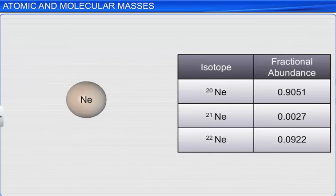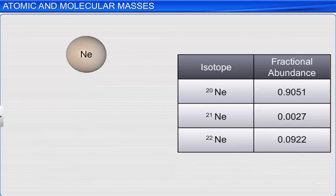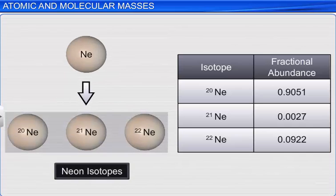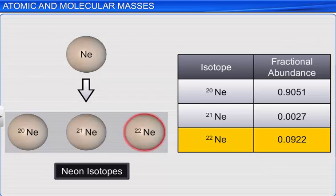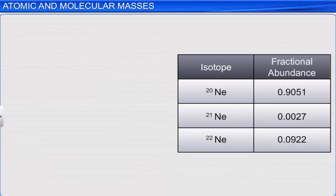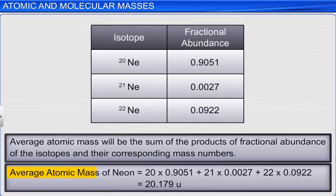For example, neon consists of three isotopes: neon-20, neon-21, and neon-22, which have mass numbers and fractional abundances as shown in the table. The average atomic mass of neon will be calculated as 20.179U.